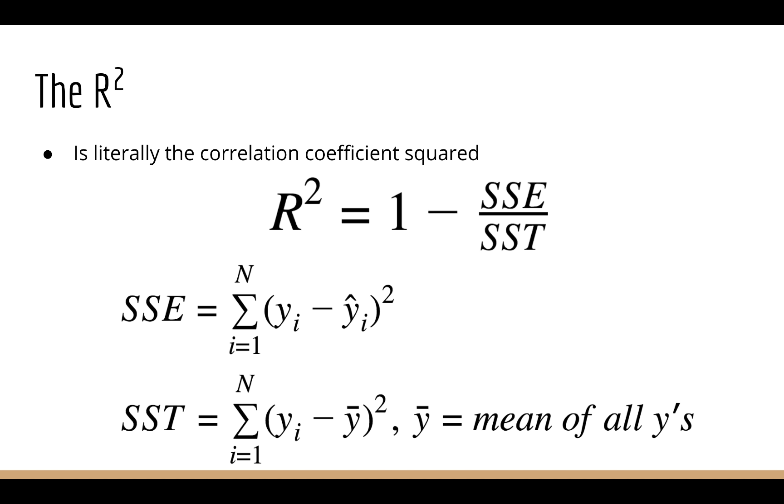SSE stands for sum of squared errors. This is just like the mean squared error, except we take the sum instead of the mean, so we don't divide by n. So for each prediction, we take the difference between it and its corresponding target, square the difference, and add all those squared differences together. SST stands for sum of squares total. This is the sum of squared differences between each target and the sample mean of the targets.